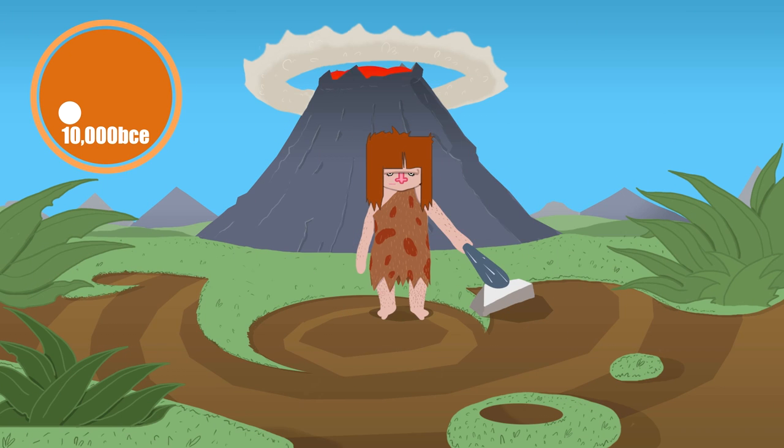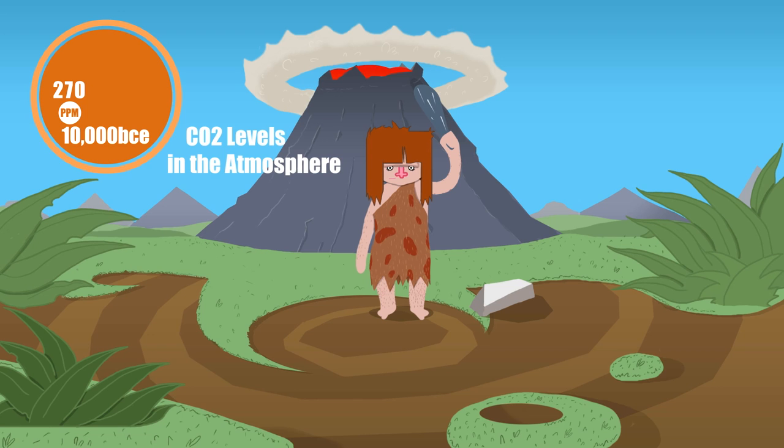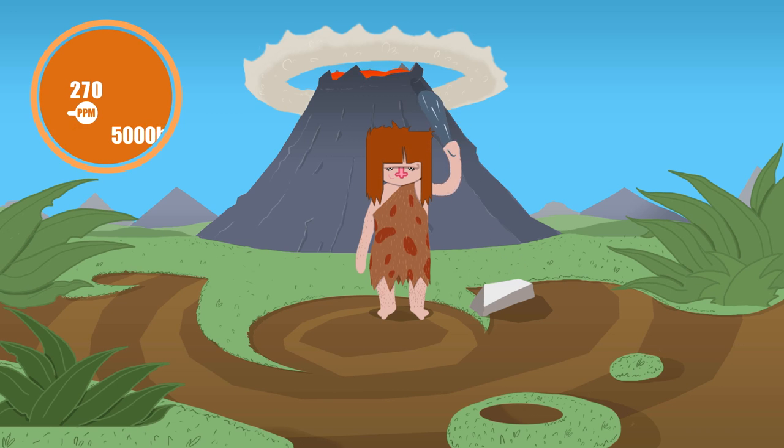During the past 10,000 years, the fairly constant CO2 atmospheric concentration of 270 parts per million kept the climate within a self-stabilizing pattern, fairly regular and hospitable to human life.